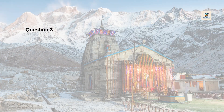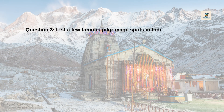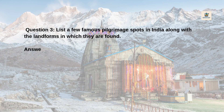Question 3: List a few famous pilgrimage spots in India along with the landforms in which they are found. Answer: Pilgrimage spots and their corresponding landforms — students to list examples from the chapter.